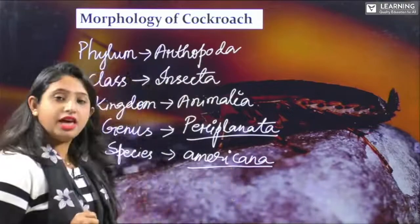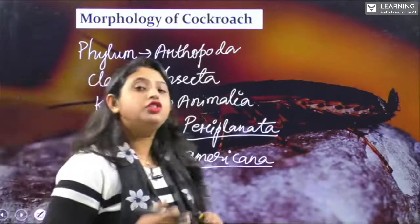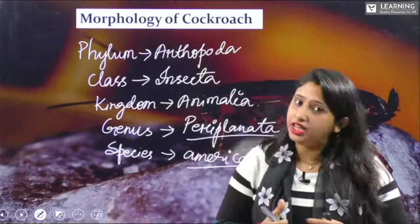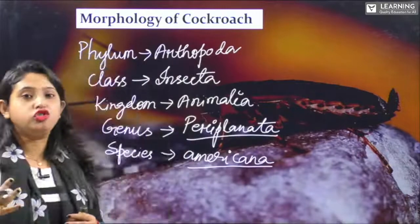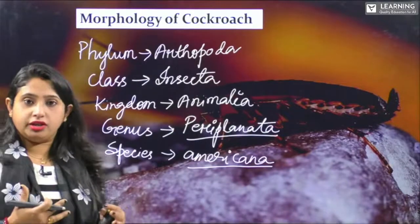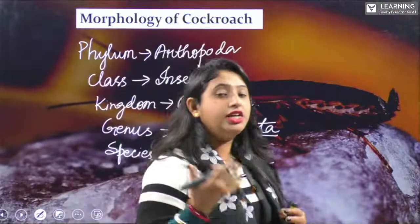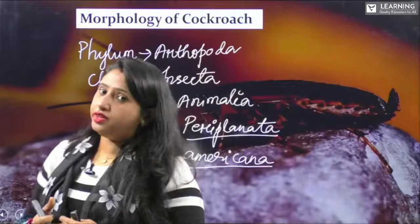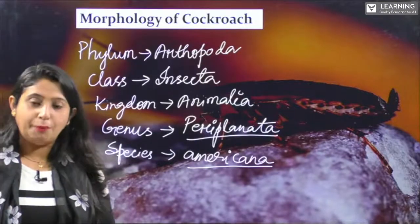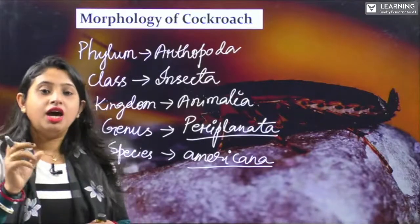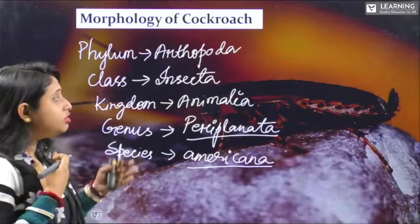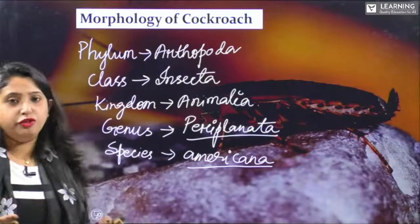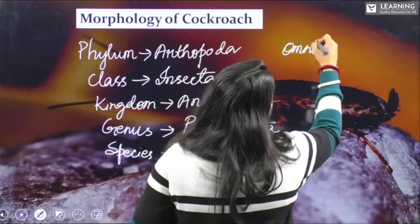Why is it called americana? The cockroach actually came from Africa, then went to America. After independence, India used to import wheat from America, and along with the wheat, the cockroach came to India. Periplaneta americana is the most common species found in India — black or brown in color, larger in size, and omnivorous, feeding on both plant and animal food.